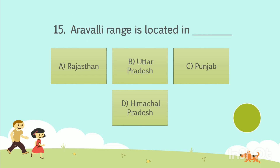Question No. 15. Aravali range is located in — ? Option A: Rajasthan. Option B: Uttar Pradesh. Option C: Punjab. Option D: Himachal Pradesh. Your time starts now. The answer is Option A, Rajasthan.